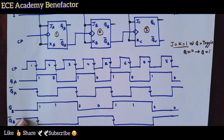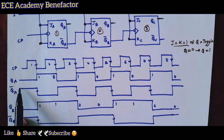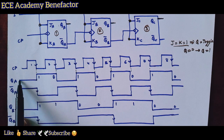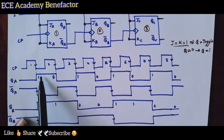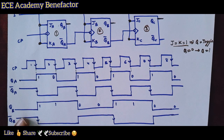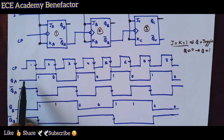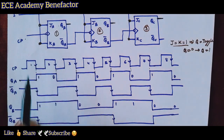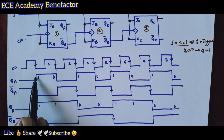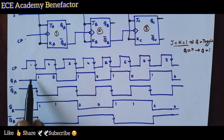Now how to draw QA-bar? QA-bar is the complement of QA. Where QA is 0, QA-bar is 1, and so on — it is like a mirror image of QA. QA responds at every falling edge of CP, and QA-bar is drawn as the complement of QA.